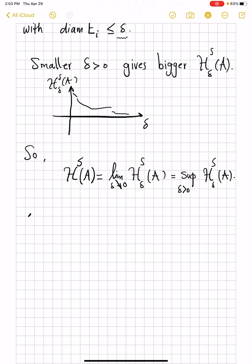So, remark number one. It could happen that for a metric space and for a set A, there is no covering by sets of diameter less than delta. For instance,